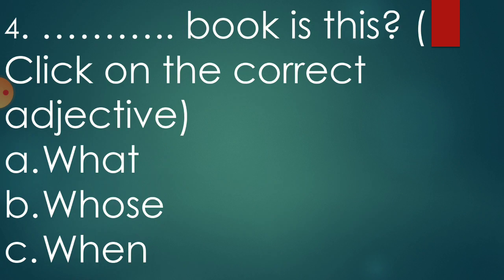Fourth question, dash book is this. Click on the correct adjective. Which adjective will be best suited here? Dash book is this. What book is this? Whose book is this? Or when book is this? And the correct answer is option B. Whose book is this?